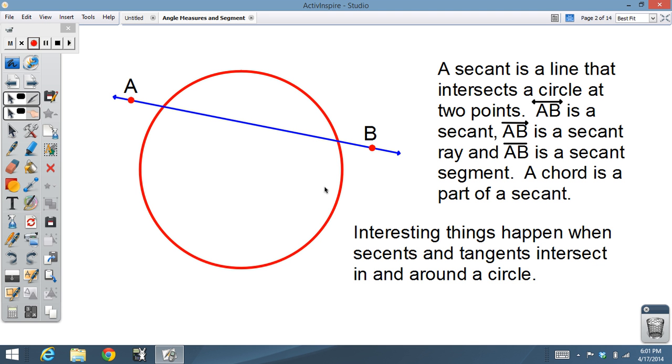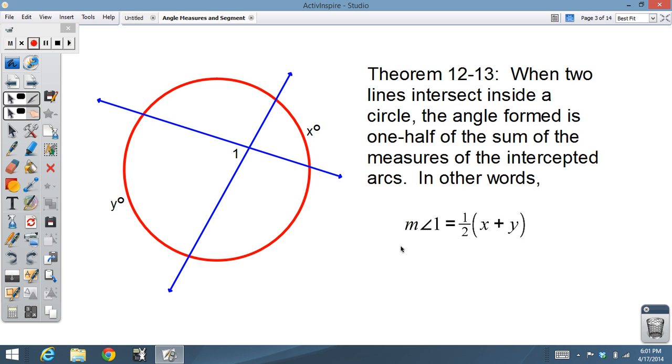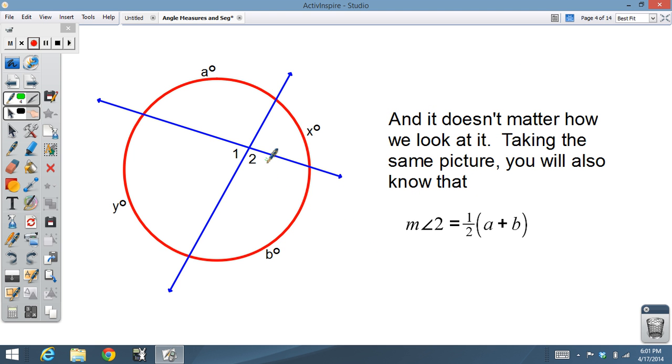So some interesting things happen when secants and tangents intersect in and around a circle. Here we go, ready? Theorem 12-13: when two lines intersect inside a circle, the angle formed is one half of the sum of the measures of the intercepted arcs. Fancy way of saying, I know here is angle 1 is going to be one half of x plus y. Seeing that right there? Measure of angle 1 is one half of x plus y. And you know what, it works no matter which way we orient it.